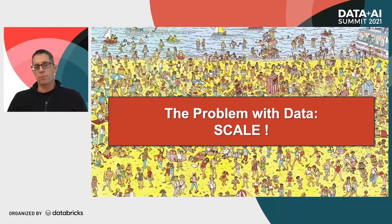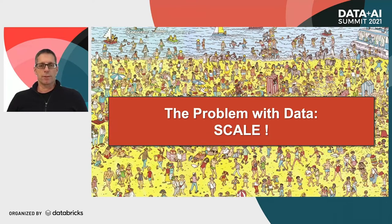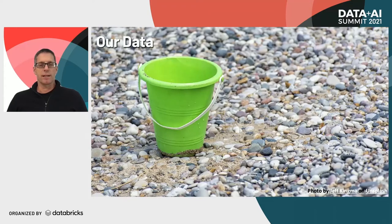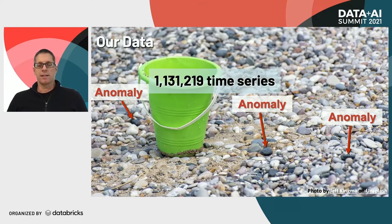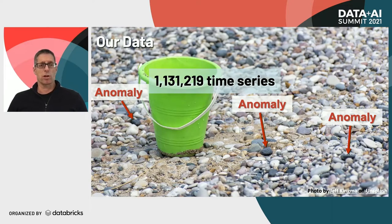So one of the problems with data is scale. At small scale, lots of things are really easy to do. At larger scale, they become a tougher problem to crack. If you look at our data, we have a lot of data and within it, we have lots of hidden anomalies hiding inside the data. Our users expect us to help them find those anomalies. Currently in our anomaly detection system, we have over 1.1 million time series that we constantly run and detect anomalies within.